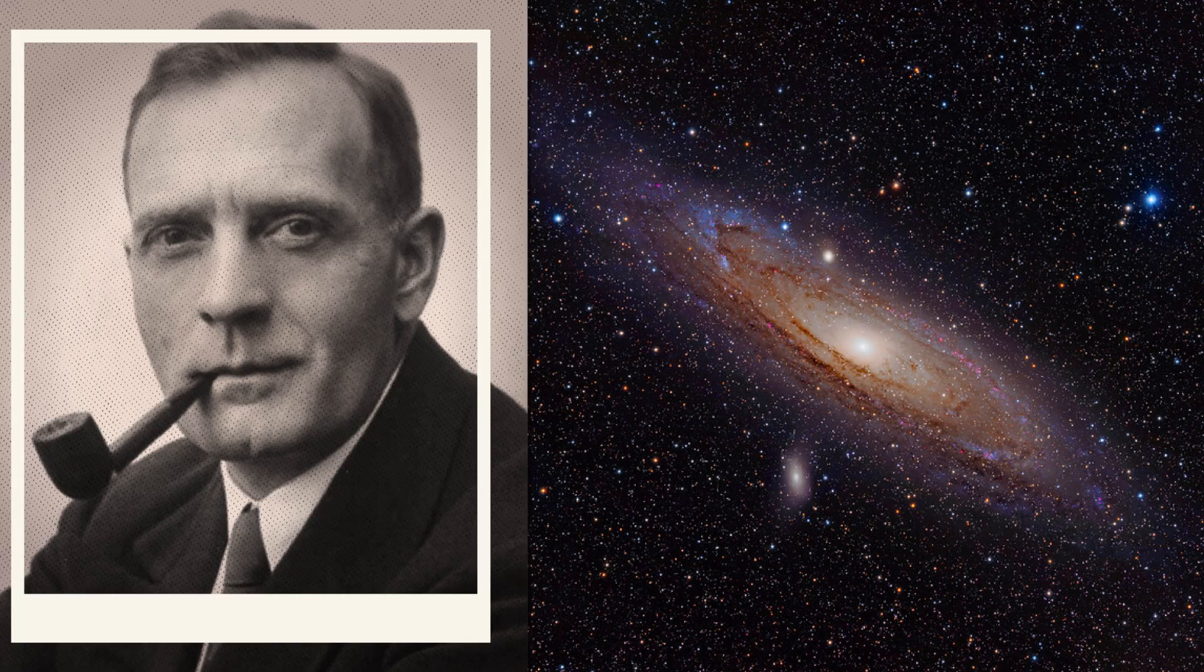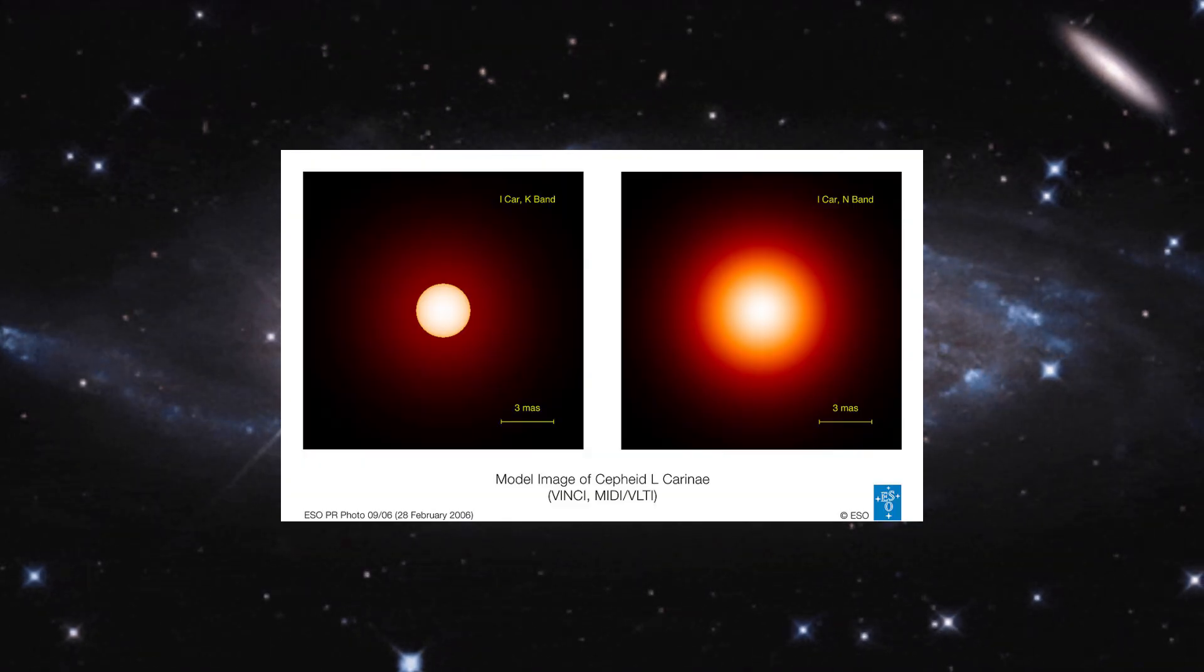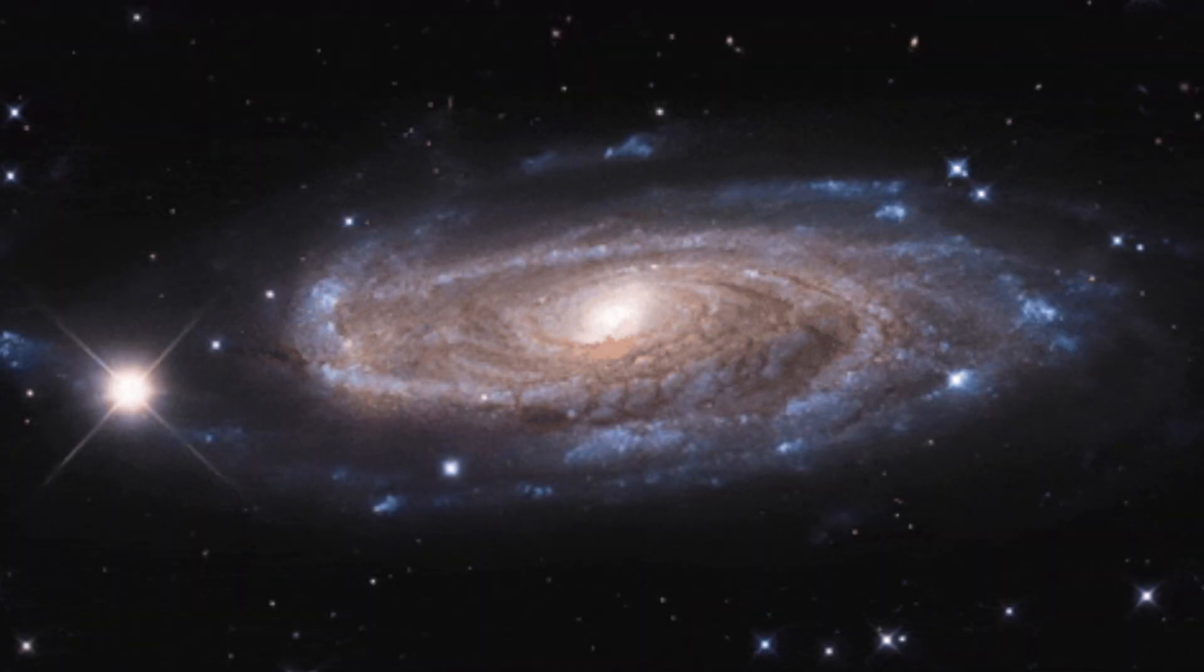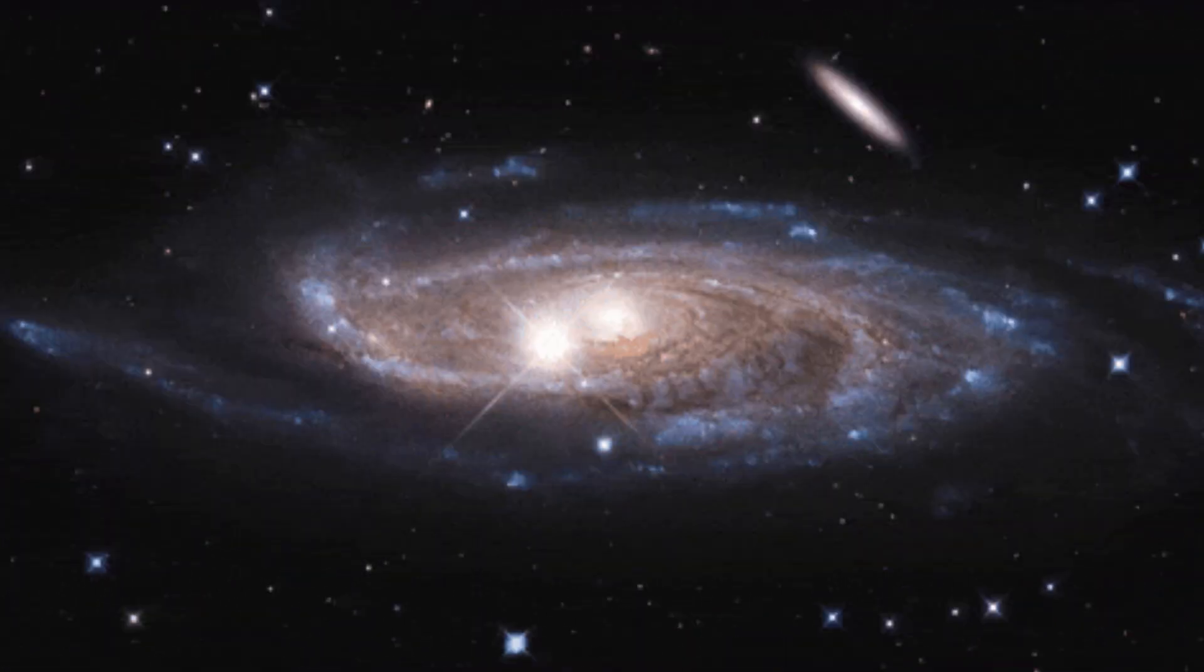It changed astronomy forever. In 1923, Edwin Hubble discovered a Cepheid variable star in Andromeda, proving it was not part of the Milky Way, but a separate galaxy. That discovery expanded the known universe from one galaxy to billions.